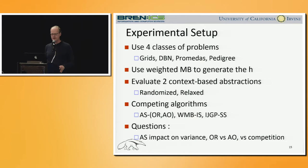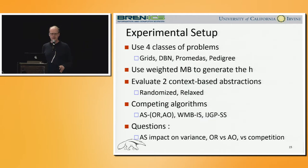Here's our experimental setup. We use four classes of problems — some are from past UAI competitions, and some are encodings of applications from biology and genetics. We use weighted mini-bucket to generate the heuristic estimate that defines the proposal distribution. We evaluate two context-based abstractions: randomized and relaxed. The competing algorithms we evaluate are two versions of our scheme — OR and AND-OR abstraction sampling — and two competing algorithms: weighted mini-bucket importance sampling, and the IJGP-based graph sample search. The questions we ask are: what is the impact of our scheme on variance, how does OR do versus AND-OR, and how do we compare with the competition?